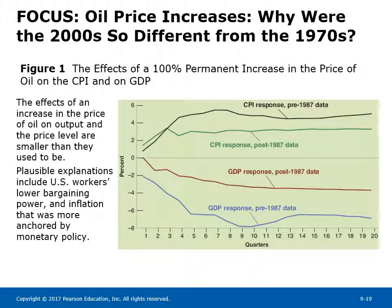Oil price increases: Why were the 2000s so different from the 1970s? Figure 1 shows the effects of an increase in the price of oil on output and the price level are smaller than they used to be. Plausible explanations include workers' lower bargaining power and inflation that was more anchored by monetary policy.